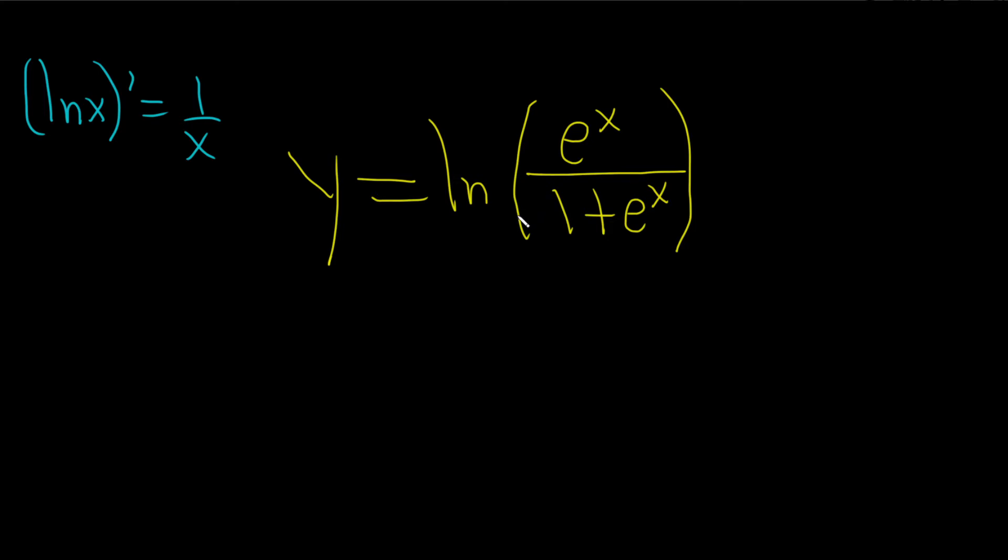We're going to start by rewriting this in a nice way. So recall if you have the natural log of a over b, this is really the natural log of a minus the natural log of b. So we can use the quotient rule for logarithms. So here we'll start by rewriting it using this property.